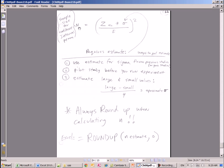So here it is. We rewrote it here. We're solving for n. How do we get that sigma? We could use an estimate from previous studies or government studies, do a pilot study before you run the experiment, or even estimate large and small values and divide by 4. This is an approximate. Also when we're doing this, we're always going to round up when calculating n. So we use round up. In previous videos, we used the round function. We're going to round up, and we'll use 0 to round up to the integer.